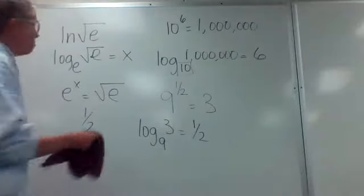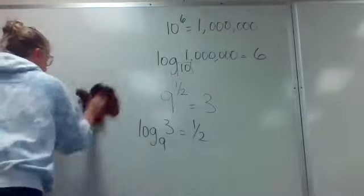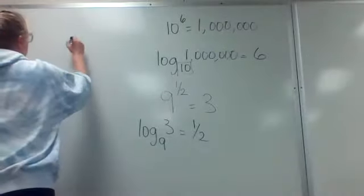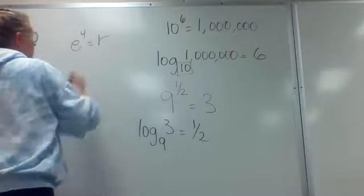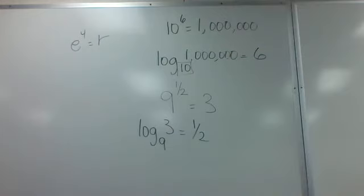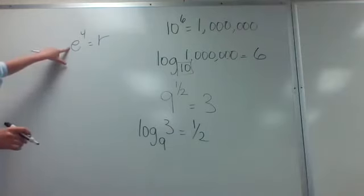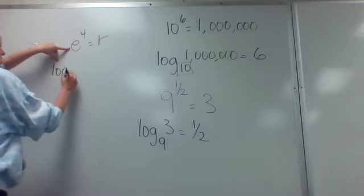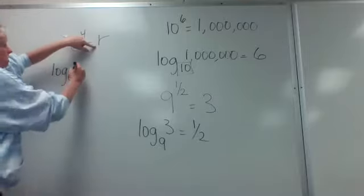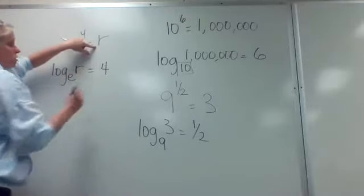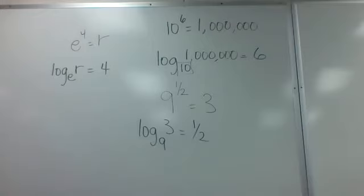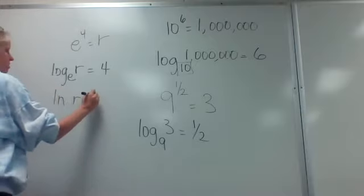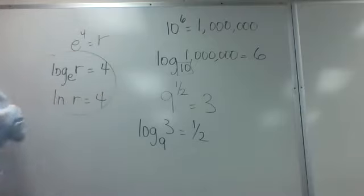Number 19: e to the fourth power equals r. The base of your exponent is the base of your log. So: log base e of r equals 4. What can I replace log base e with? Log base e is the same thing as the natural log, so you can write it as ln(r) = 4. Either way will be accepted.